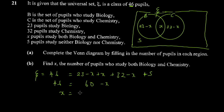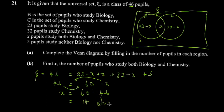Transposing: x goes to the left side and 46 goes to the right, changing signs, giving x equals 60 minus 46, which equals 14. So x equals 14 students. Getting a positive number is good — there's no way to have a negative number of pupils.